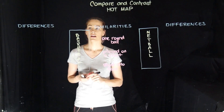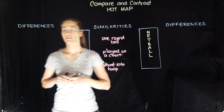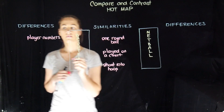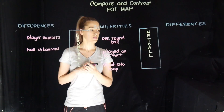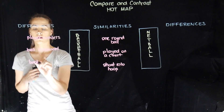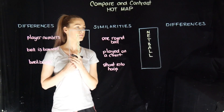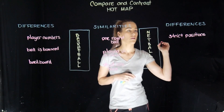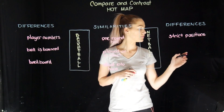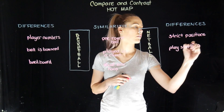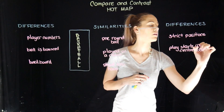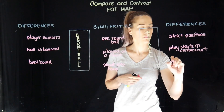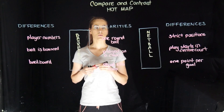Then we're going to go across and do some differences. The first difference: the number of players. The ball is bounced. And then there's a backboard. There are strict positions. The player starts in centre court. It is one point per goal.